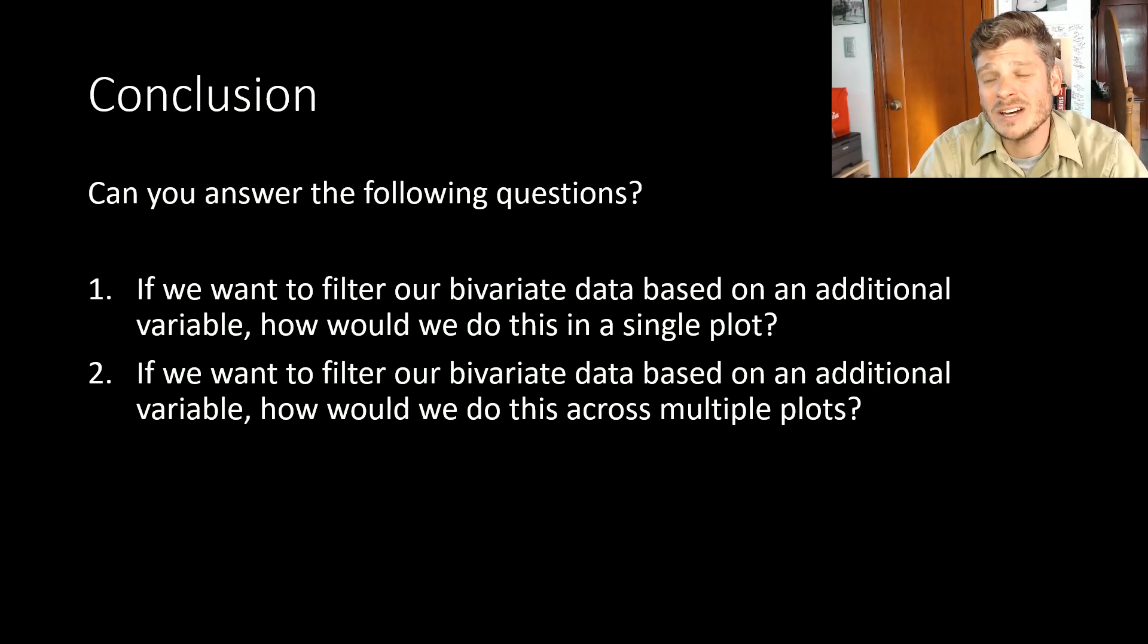The two questions: If I wanted to filter our bivariate data based on just one additional variable, how would I do this if I wanted that one additional variable to still be done in one single plot? And what if I wanted to filter my bivariate data based on an additional variable, but instead of just doing it all in one plot, I wanted to do it across multiple plots? How would I do that? Those are the two questions you should be able to walk away from this lecture with the answer to. If not, go back, rewatch it, take another look. And as always, take care of yourselves.